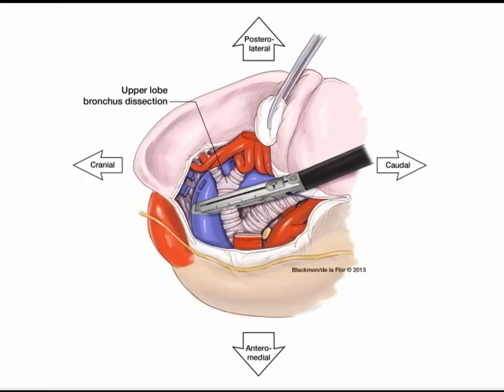Occasionally, approaching the left upper lobe bronchus is facilitated by also taking the lingular pulmonary artery branch. In that case, we recommend stapling a bit of the fissure, disconnecting the left upper lobe from the left lower lobe, then identifying, encircling, stapling, and dividing the pulmonary artery branch to the lingula. Once this has been performed, passage of the stapler around the left upper lobe bronchus is often easier to navigate.